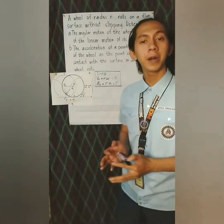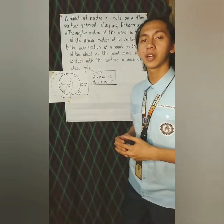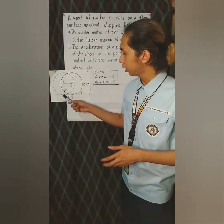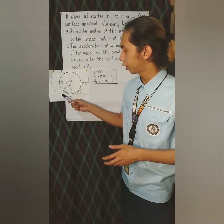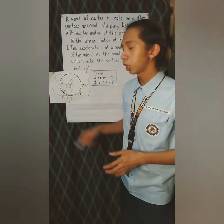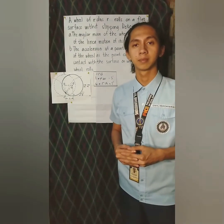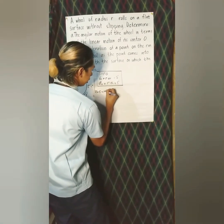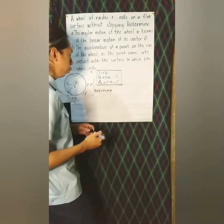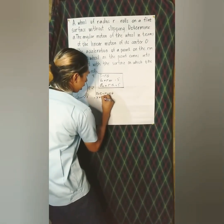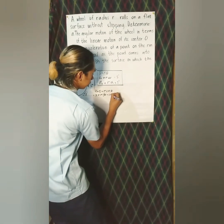For letter B, in the problem there is no given numerical value, but we can get the answer in terms of variables. The origin of the fixed coordinate is taken conveniently at the point between point C of the rim of the wheel and the ground. If point C moves along the path until point C prime, the coordinates will change. For coordinate X: X is equal to S minus R sine theta, and since S equals R theta, substituting gives X equals R times (theta minus sine theta).